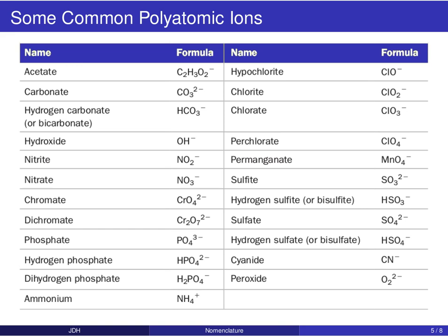So we have, for example, acetate with the chemical formula C2H3O2−, carbonate, hydroxide, nitrate, chromate, and the list goes on. What I want you to do is be able to identify, given a formula, that it corresponds to a common polyatomic ion and know its name. Essentially, get very comfortable using this table to identify the names of these different ions.